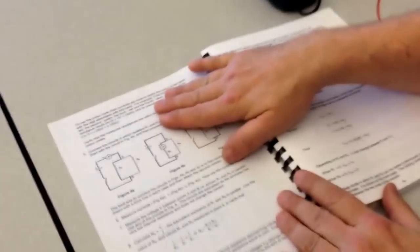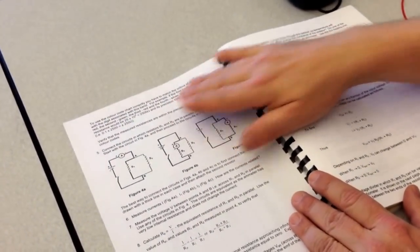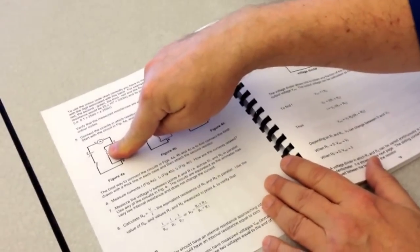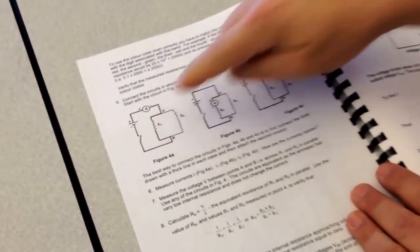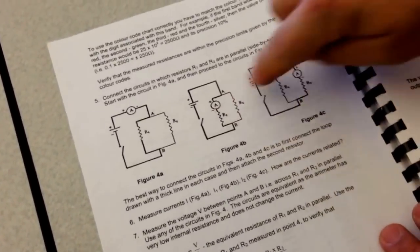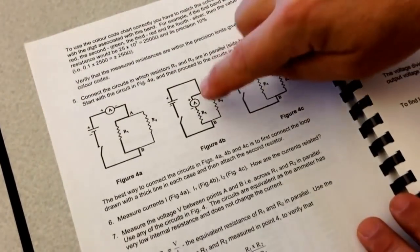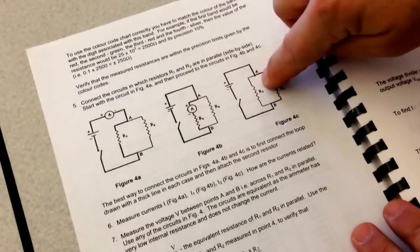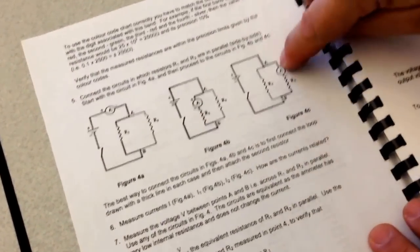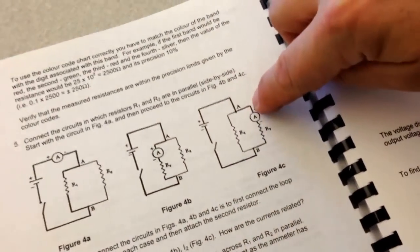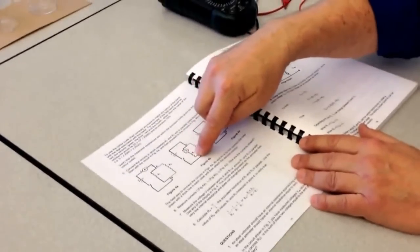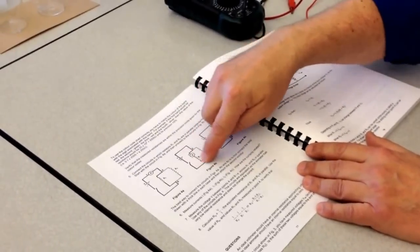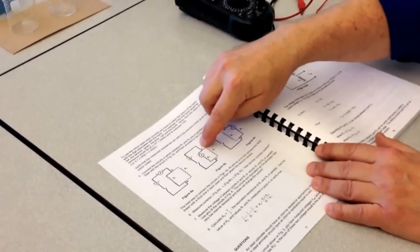We conclude this part of the experiment by constructing a circuit with resistors in parallel. And these three circuits are exactly the same, except this circuit and this circuit, the ammeter is located at, is connected to two different branches. So this way we get to actually see what the current is after it's split at that junction point A here.